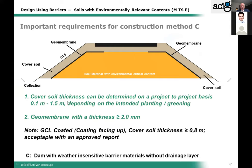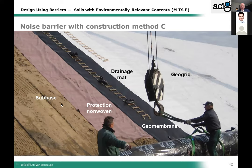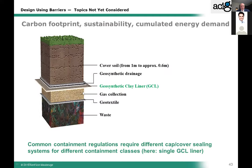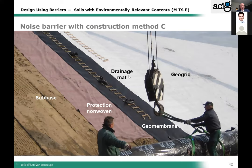Ten centimeters of cover soil over a geomembrane is just not enough — it depends very much on planting, greening, and other requirements, such as whether a car could run downhill. The designers are asked to look into it. The geomembrane should be 2 mm thick and include a protection layer, drainage layer, and geogrid. The geosynthetic industry is pleased with this guideline because it gives many options to design with geosynthetics.